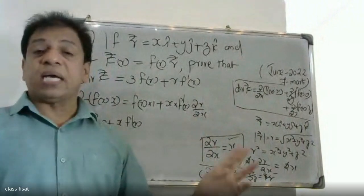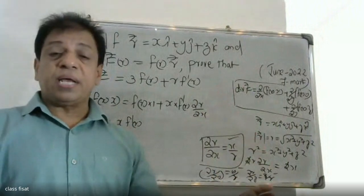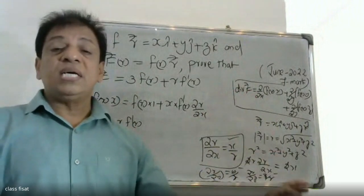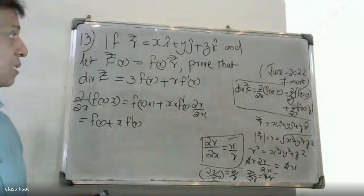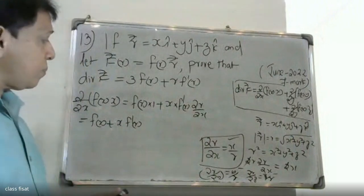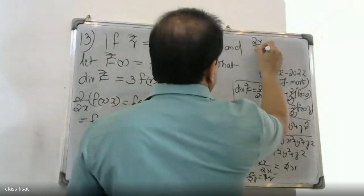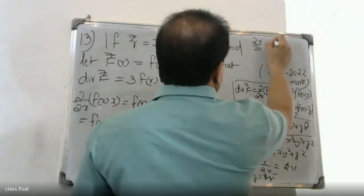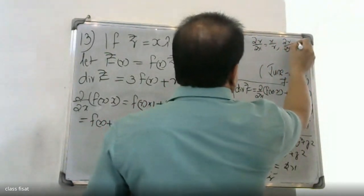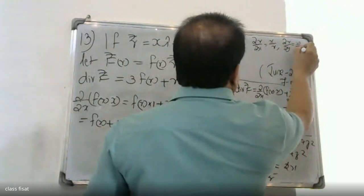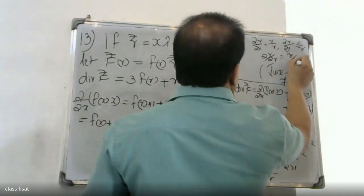So we have: ∂r/∂x equals x/r, ∂r/∂y equals y/r, and ∂r/∂z equals z/r.